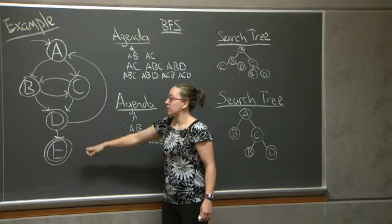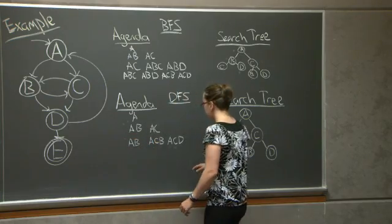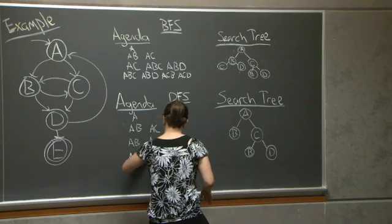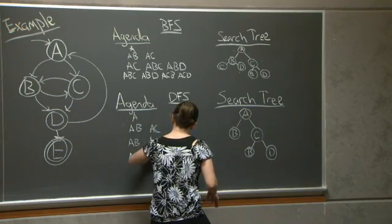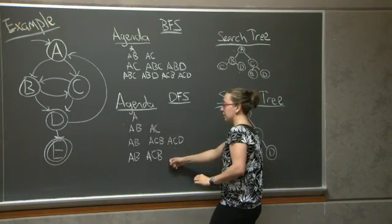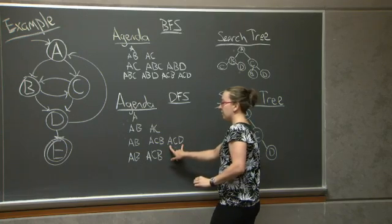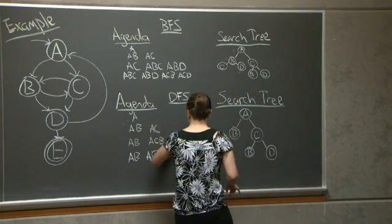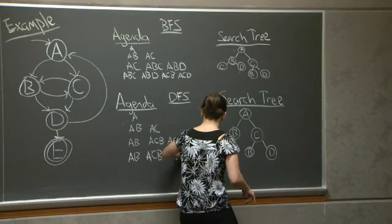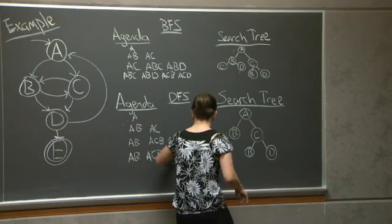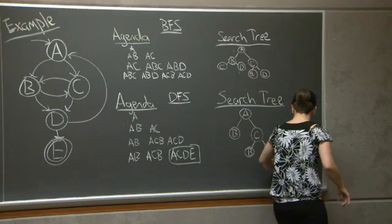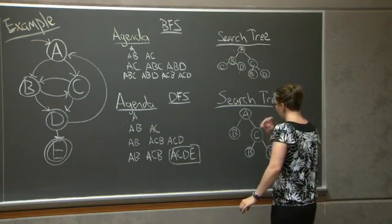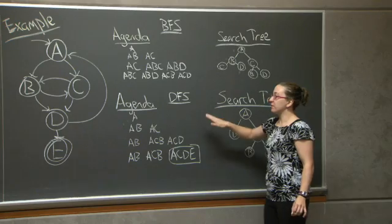So AB and ACB remain on the agenda. I popped off ACD in order to expand D. And I found this path. At this point, I've concluded depth-first search.